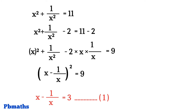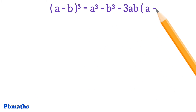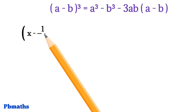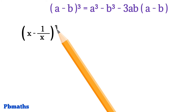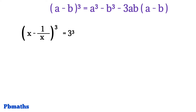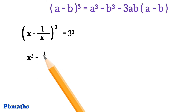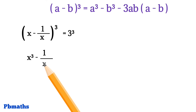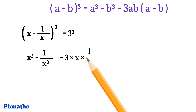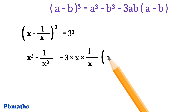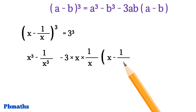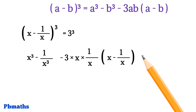Let's cube on both sides. By cubing on both sides, we have x minus 1 by x whole cube is equals to 3 cube. Now that left hand side is in the form of the algebraic identity: a minus b whole cube is equals to a cube minus b cube minus 3ab into bracket a minus b. So let's expand that left hand side. By expanding that, we have x cube minus 1 by x cube minus 3 into x into 1 by x into x minus 1 by x equals. In the right hand side we have 3 cube, and the value of 3 cube is 27.